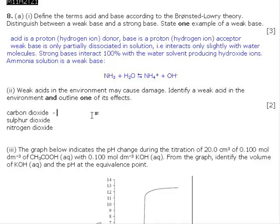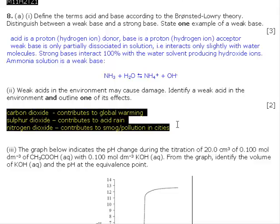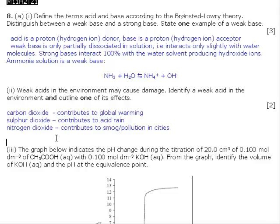Carbon dioxide causes or contributes to global warming. Sulfur dioxide contributes to acid rain. Nitrogen dioxide also contributes to acid rain, but let's have something different. It contributes to smog pollution in cities because nitrogen dioxide is formed in car engines.